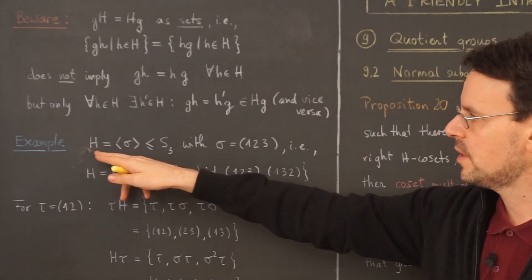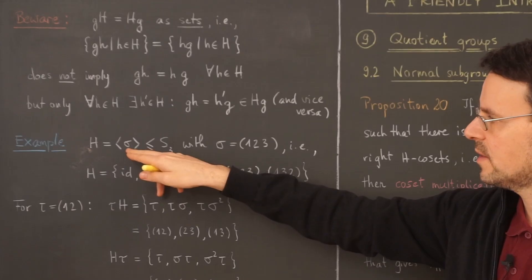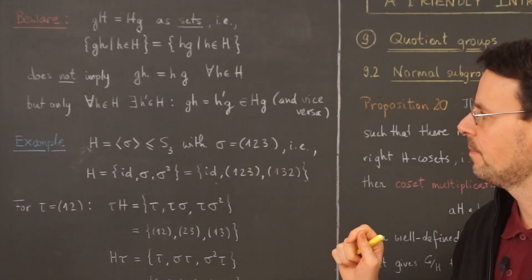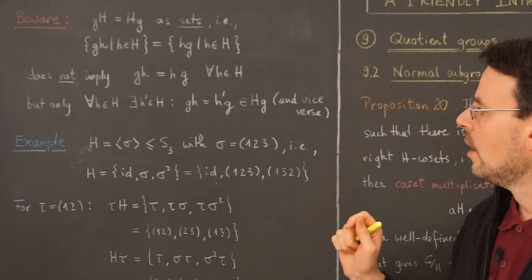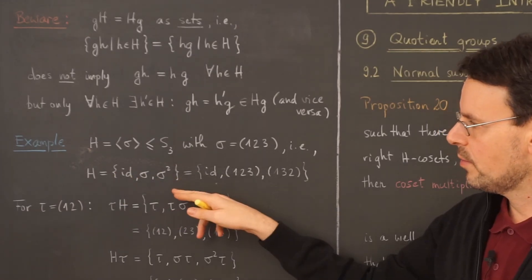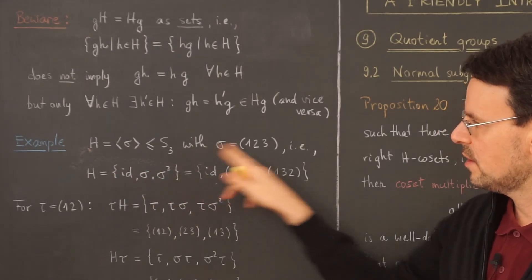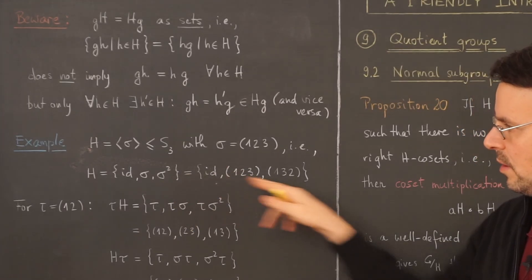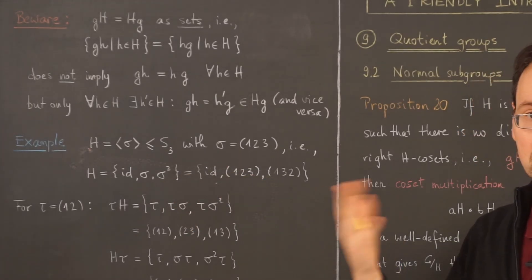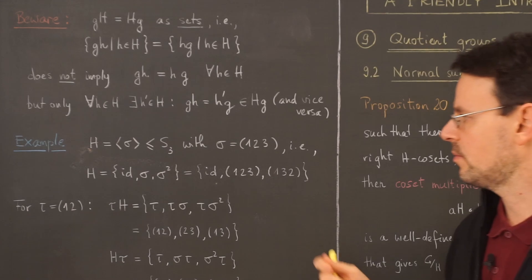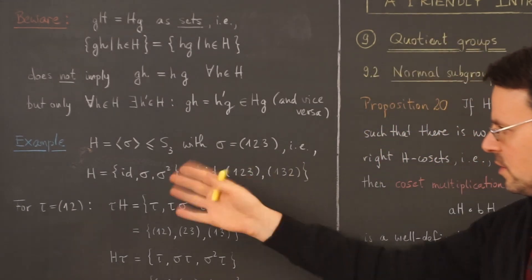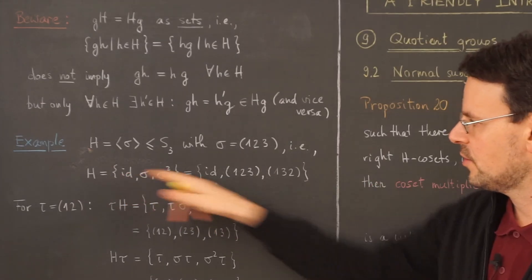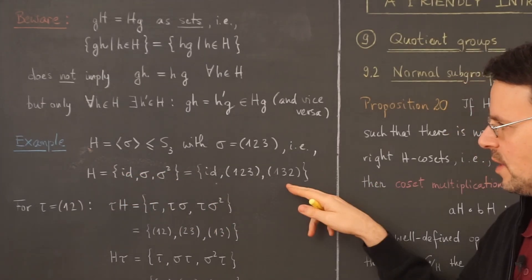We consider the cyclic subgroup generated by a 3-cycle sigma in S₃, which consists of three elements: the identity, sigma itself, and sigma squared. If you feel the need to do some more computations with permutations, please check all the details here yourself. So H is this subgroup.